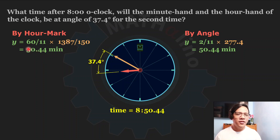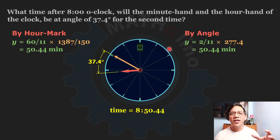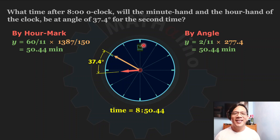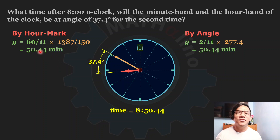You may wonder where these numbers came from — what is that 60 over 11, 2 over 11, and 1387 over 150. Continue watching this video until the end because my goal here is for you to use this approach with utmost confidence. We are not going to compromise the principles behind the clock problem. I hope this will open a door for you so that you can develop your own strategy in creating shortcut solutions.